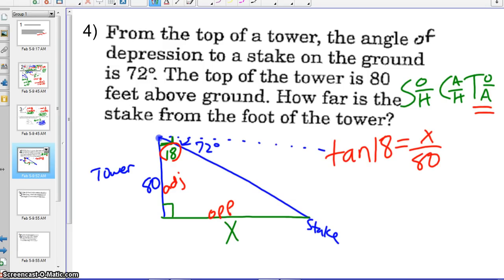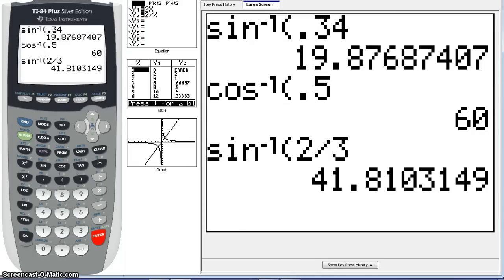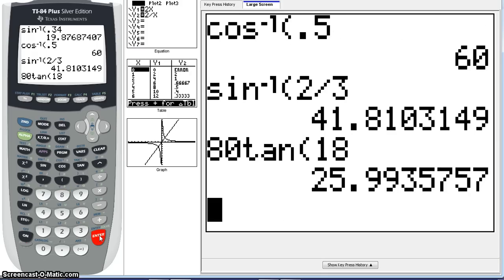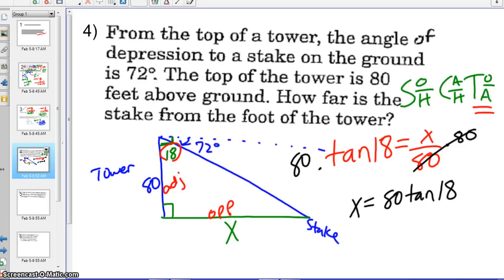Now, in order to solve for X, we need to multiply both sides by 80. So our X value is going to equal 80 times the tangent of 18. We can go to our calculator and type that in. We get 25.99, and we typically round our sides to the nearest tenth, so that would give us approximately 26 feet.